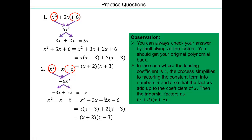Always check your answers by multiplying out. Once you have your factors, use the distributive property: x times x is x squared, x times negative 3 is negative 3x, plus 2 times x is positive 2x. Negative 3x plus 2x gives negative x, and positive 2 times negative 3 gives negative 6. You can use FOIL to multiply out and verify you got it right.